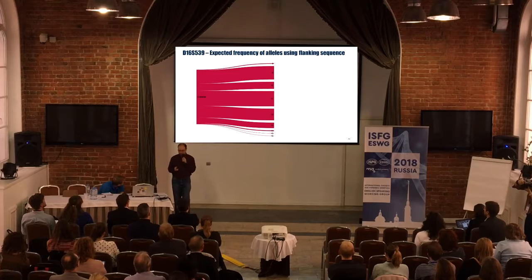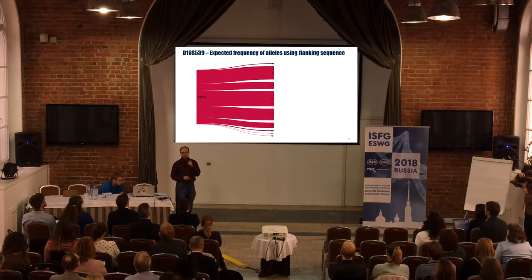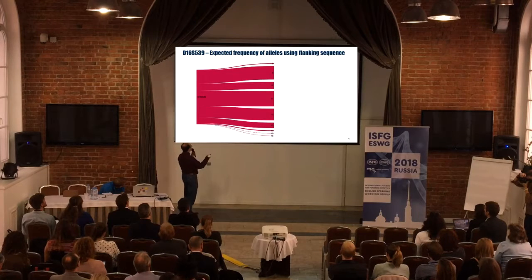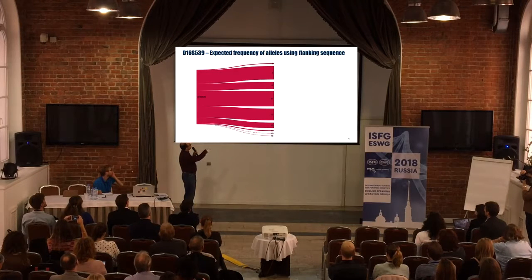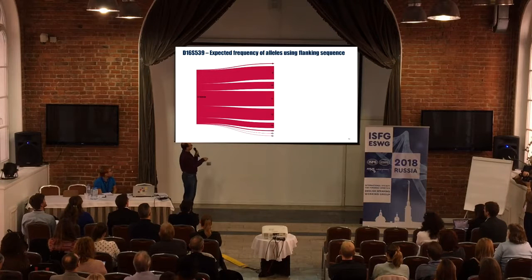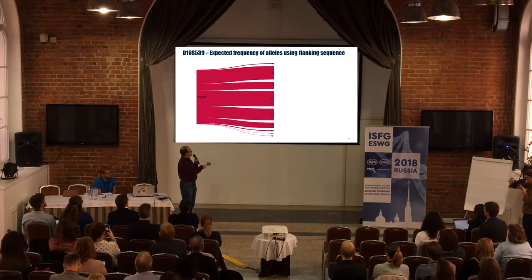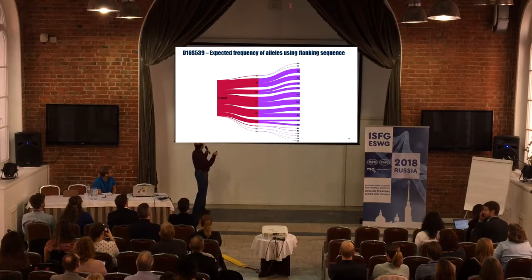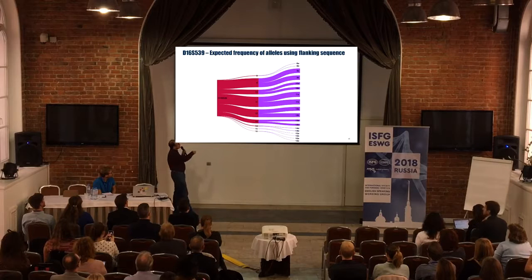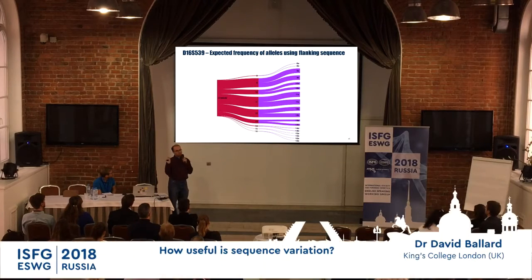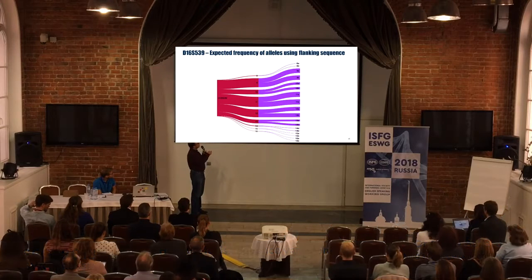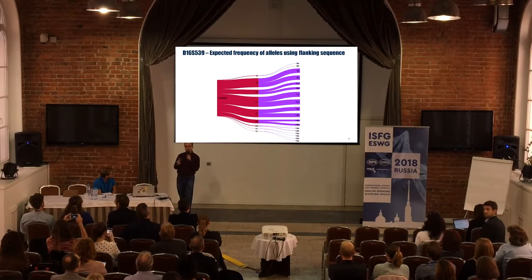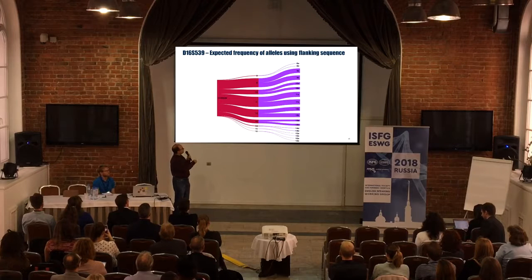So what would this do? This is a representation of allele frequency — this is D16. These are all the different alleles we can see by size, so you can see that allele 11 is the most frequent, then allele 8, 15, 16, and the red ones. If this is the frequency we had and we looked at it with our sequence-based analysis, this was the allele frequency sequence-based.